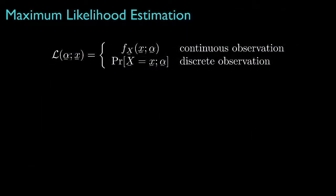Whereas we typically view the probability density or mass functions as functions of the observation that are parameterized by some parameters, we view the likelihood as a function of the parameters that is parameterized by the observations. That is, for every possible value for the parameter vector, the probability density or mass functions are functions of the observation vector. Regarding the likelihood, for every possible value of the observation vector, the likelihood is a function of the unknown parameter vector.